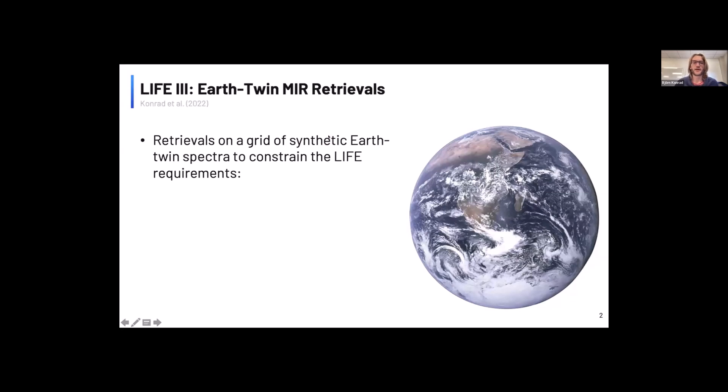To start off, I would like to briefly talk about the third LIFE paper, because this is the paper where we basically set the base requirements for LIFE. So in this paper, we investigated by studying an Earth-like planet around a Sun-like star what the minimal requirements for LIFE have to be in order to be able to characterize such a planet.